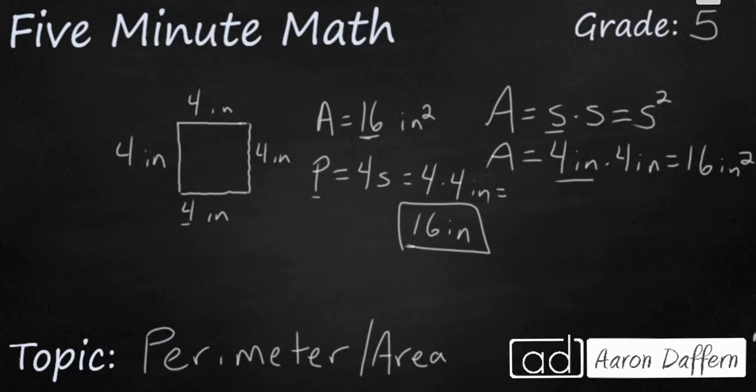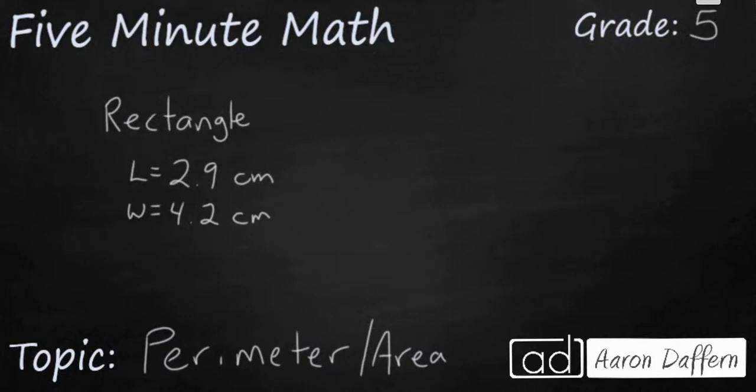Let's look at a different example. In some cases you'll be given a simple description without the benefit of a picture. So let's say we have a rectangle length of 2.9 centimeters and width of 4.2 centimeters. Can you find the perimeter and the area?